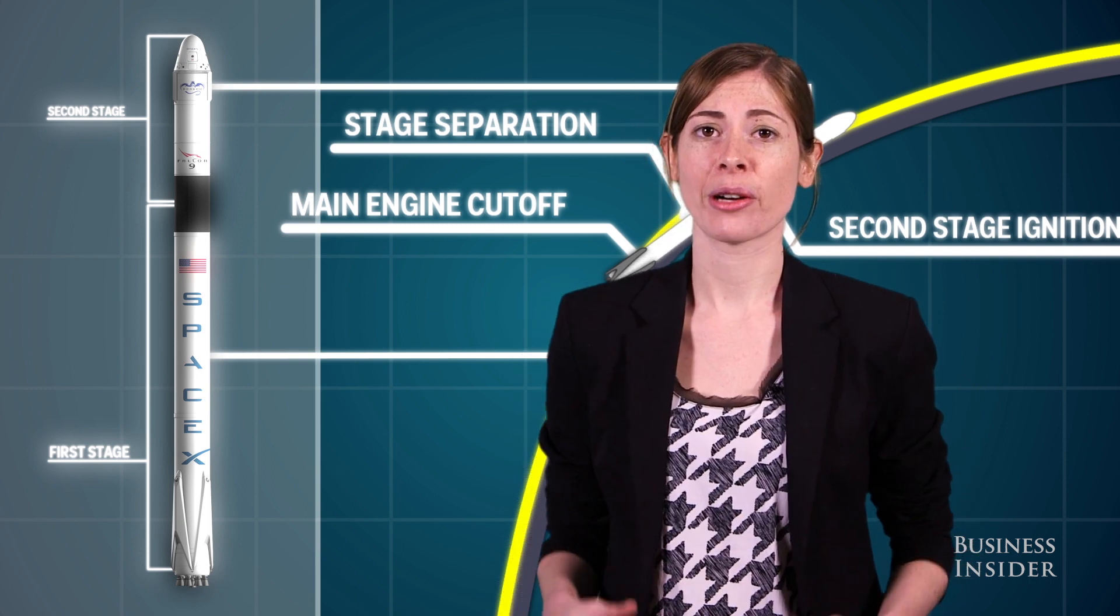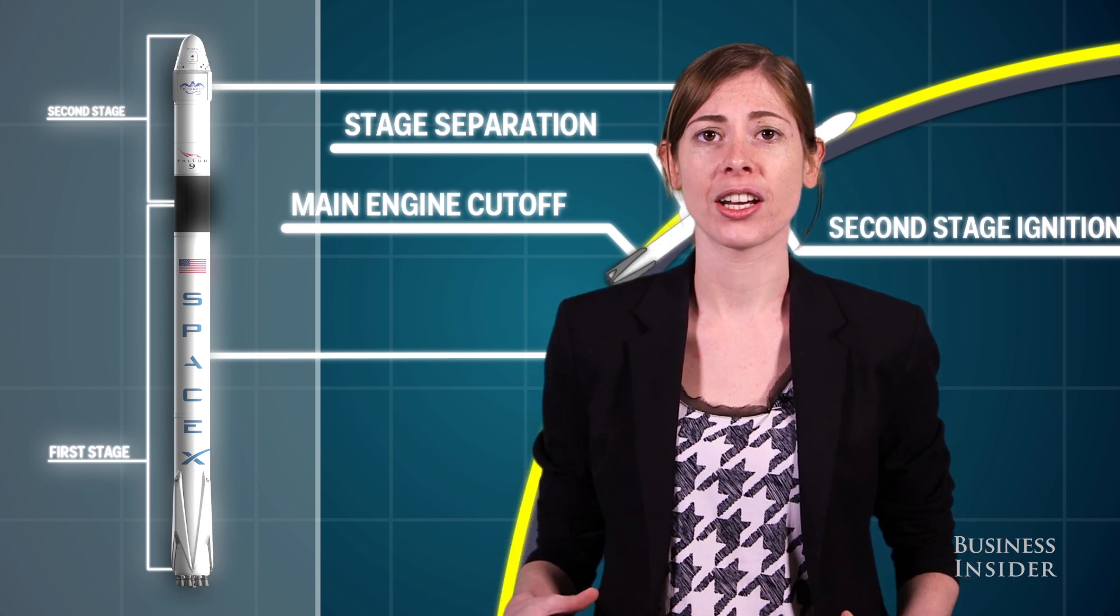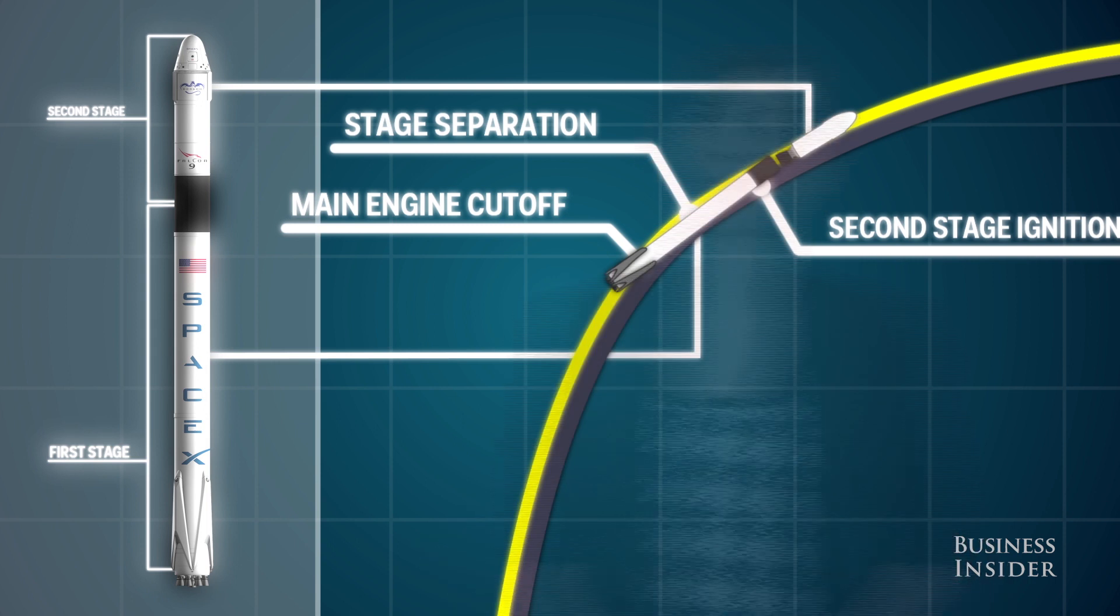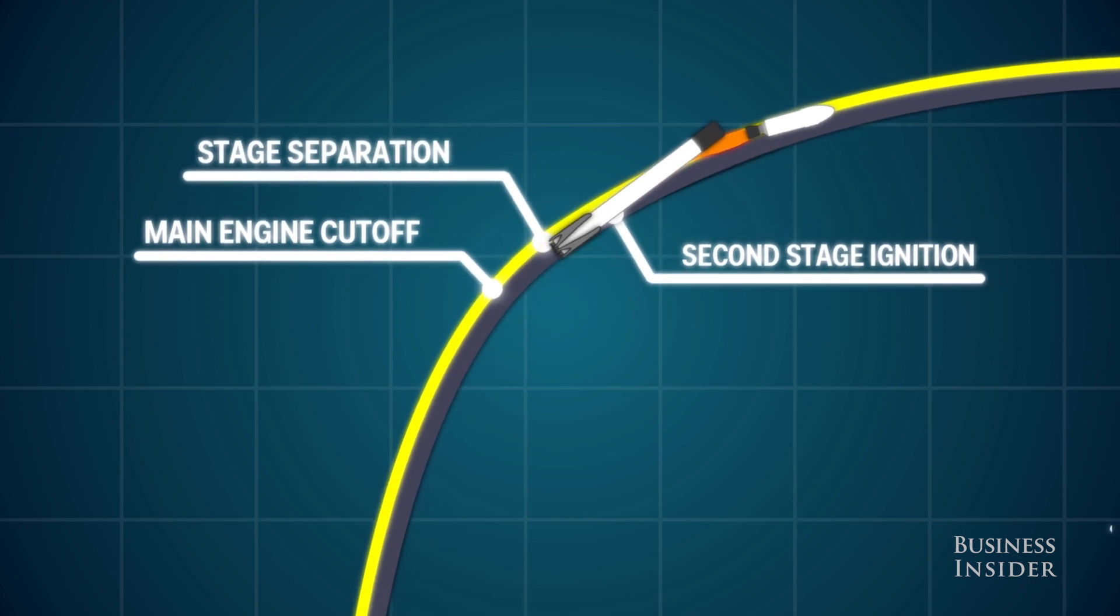Both rocket stages are reusable, but right now, SpaceX is working on salvaging only the first stage, which is the larger, more expensive piece of machinery. To do this, SpaceX performs a number of complex steps after separation.